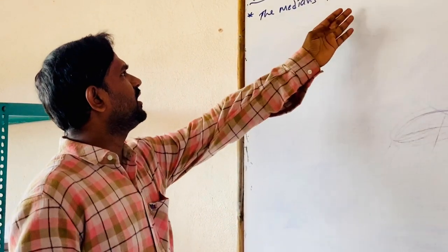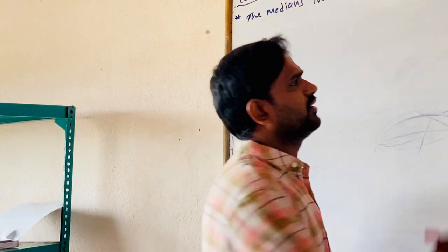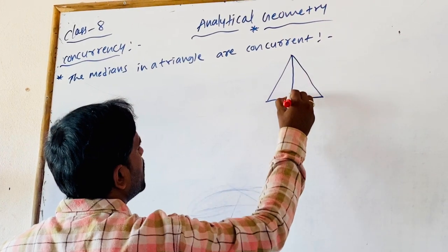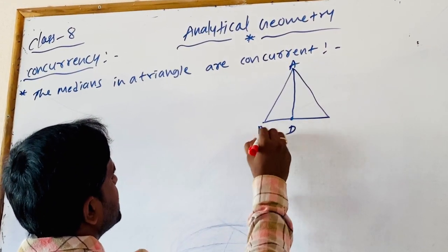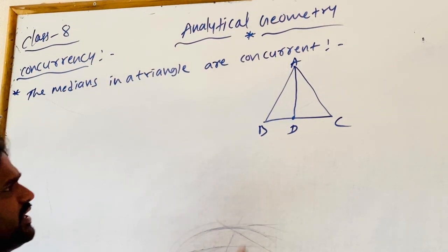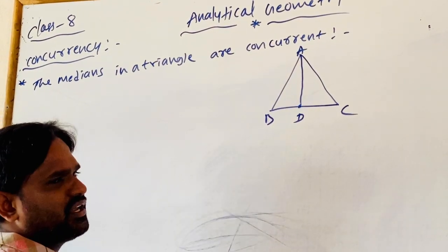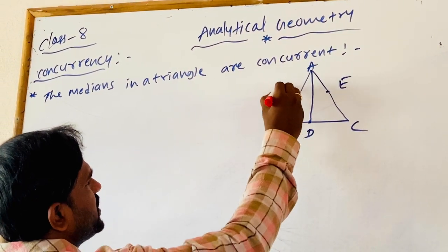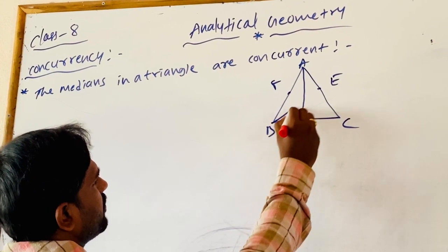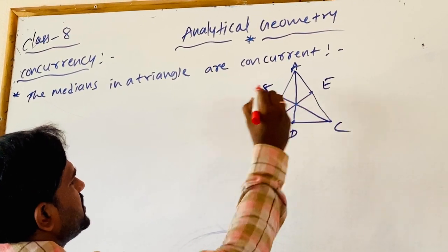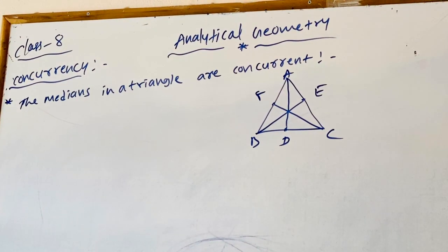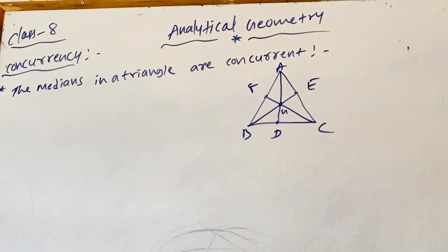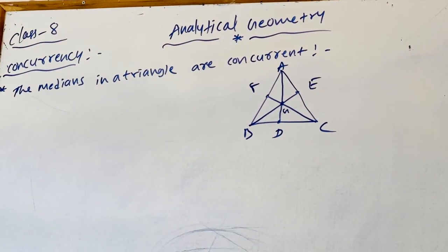Now we are going to discuss about the medians in a triangle being concurrent. What is a median? A median is a line segment drawn from a vertex to the midpoint of the opposite side. In triangle ABC, AD is the median where D is the midpoint of BC. Similarly, E is the midpoint of AC, F is the midpoint of AB. BE and CF are also medians. AD, BE, CF intersect at a point known as the centroid — the point of concurrence.